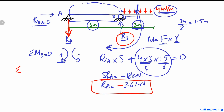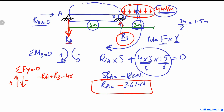To find RB, we use the equilibrium condition: summation of all vertical forces equals zero. Upward forces are positive, downward forces are negative. RA is now acting downward so it is −RA. RB is assumed upward, so it is positive. The distributed load acts downward: −4 × 3. Setting the sum equal to zero and substituting RA = 3.6 kN: −3.6 + RB − 12 = 0.